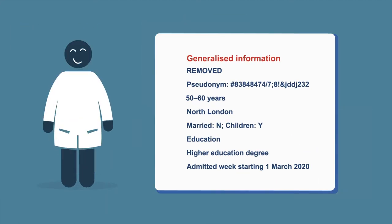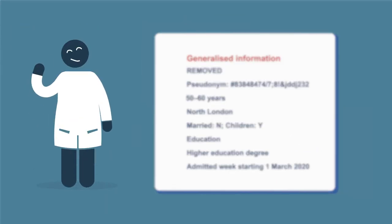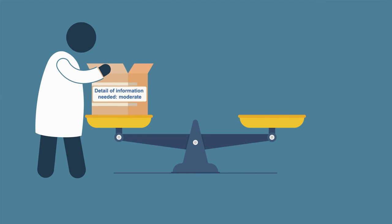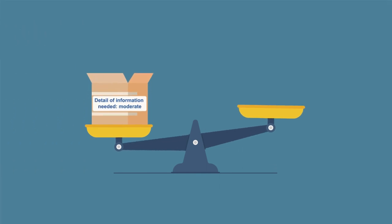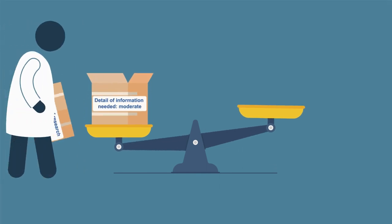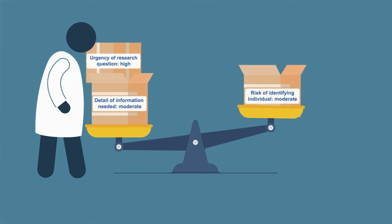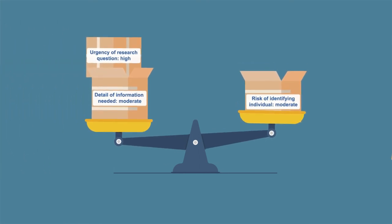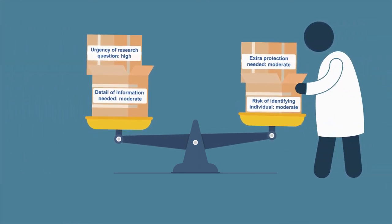Even so, sometimes this information is too vague, and a decision needs to be made about how much identifiable information has to be included, and so how much protection must be put in place. But how do you decide? Well, it is often a question of weighing up what information is needed to answer a question, and how urgent that question is against the risk of someone being identified, and what measures could be put in place to protect the data.